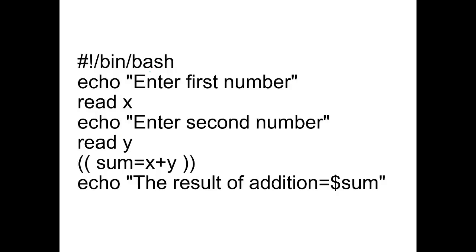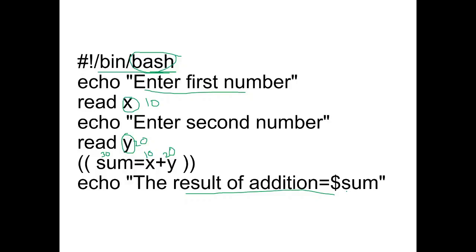Let's look at one example on these operators. The first line must always specify the interpreter and shell type being used. The script asks to enter a first number, which is stored in variable x — for example 10. Then it asks to enter a second number, stored in variable y — for example 20. The two values are added, and the result is stored in variable sum, which is then displayed on the screen as 'the result of addition is' followed by the value of sum.